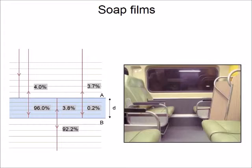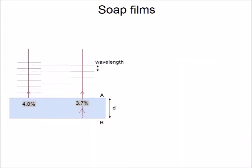Now, these 3.7% have been phase shifted, meaning that the peaks of the waves are at different positions in space and time than the light initially reflected from surface A.